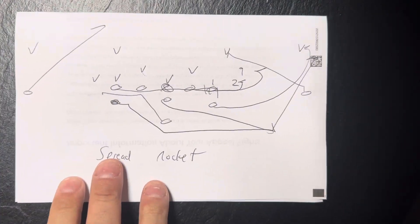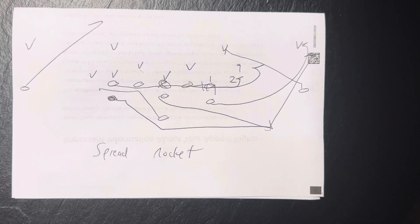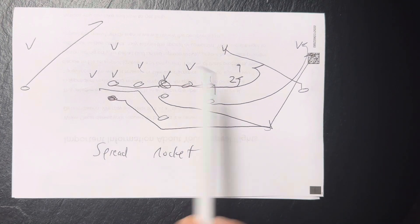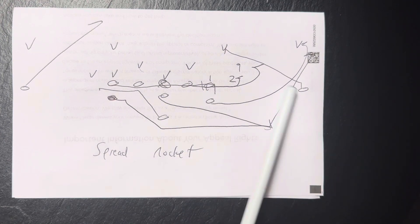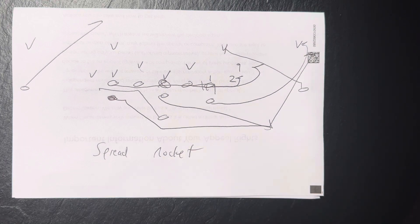For the first over 15 years we ran the rocket toss, from 98 to 2014, we always ran it out of the spread formation. So what happens when you run into a two-man surface, the receiver's going to crack the safety, the A back's going to block the corner. That part's okay.